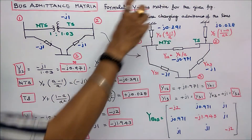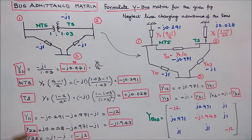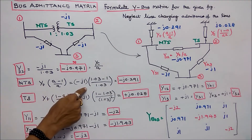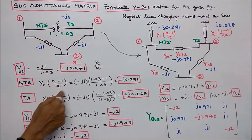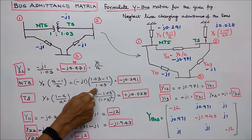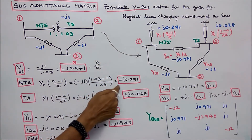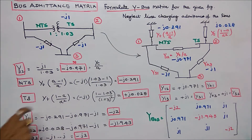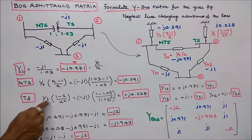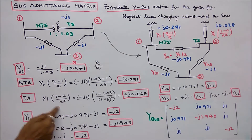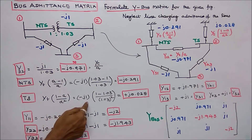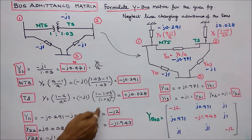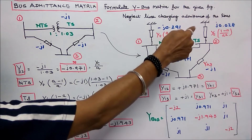The tap-setting side line charging admittance is Yt times (A minus 1) divided by A: minus J1 times (1.03 minus 1) divided by 1.03, which equals minus J0.0291. On the tap-setting side, Yt times (1 minus A) divided by A squared: minus J1 times (1 minus 1.03) divided by 1.03 squared, which equals J0.028.